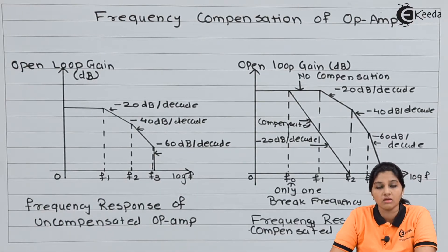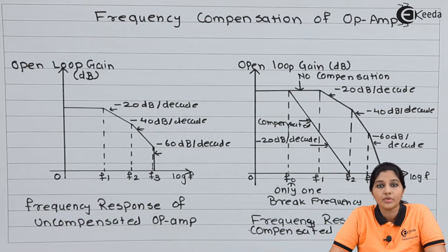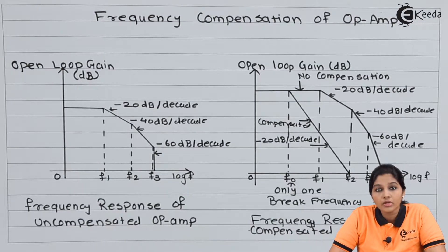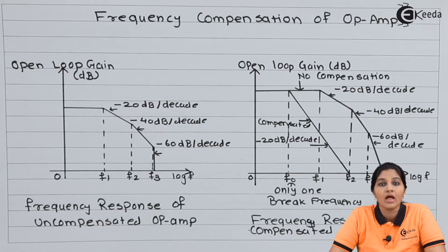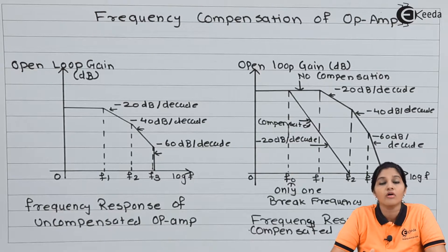In case of op-amp there are two types: uncompensated op-amp and compensated op-amp. These types are based on the presence or absence of internal capacitance in the op-amp. Now, the open loop gain of op-amp ideally does not depend on frequency, but practically it is not possible — the open loop gain changes with respect to frequency. So let's first have a look at the uncompensated frequency response of op-amp.